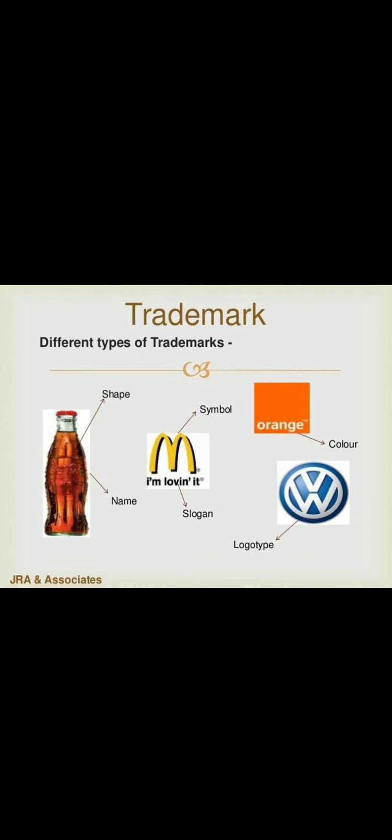Now we will see different types of trademark in a brand. Here we see a Pepsi bottle — we can see the shape, a different shape and name given to it. For McDonald's we have a slogan, 'I'm loving it,' and the symbol is M. An orange color is represented by its color. For the Volkswagen logo, it is a logotype — a particular logo. All of these come under trademark.